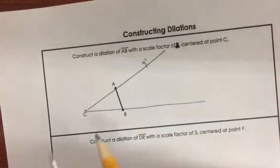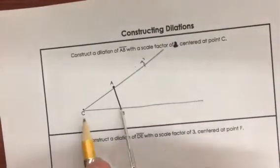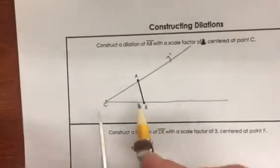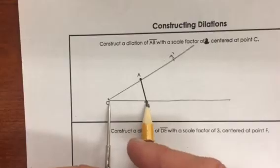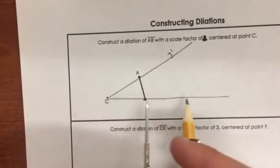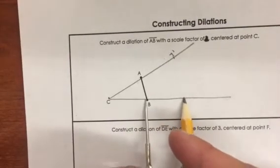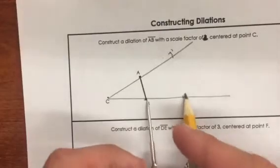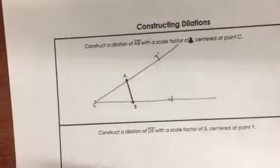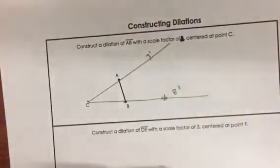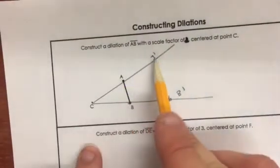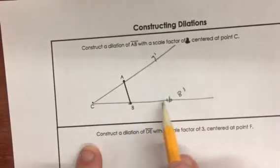Now we do the same thing with B. We just measure how long C to B is—that's our center of dilation to B. And now we just move it over again. You look right here, we draw this little mark right here. And that's gonna be our B prime right here. All right, so now A is twice as far as when it started and B is twice as far as when we started.